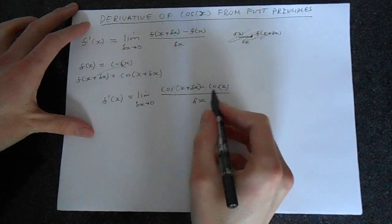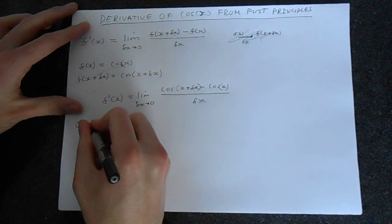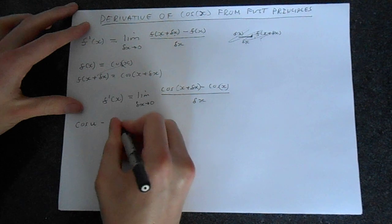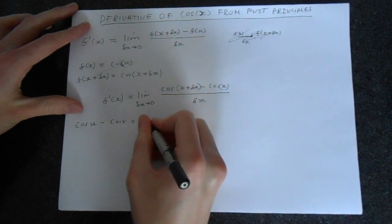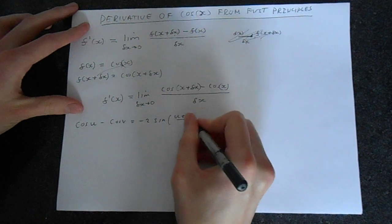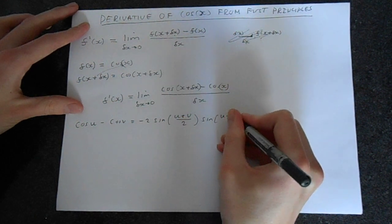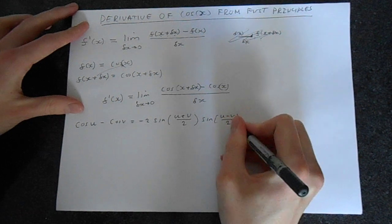Now we want to make this in a form that we can take limits of. So let's use a trig identity. Cos u minus cos v equals minus 2 sine u plus v over 2, and then sine u minus v divided by 2.